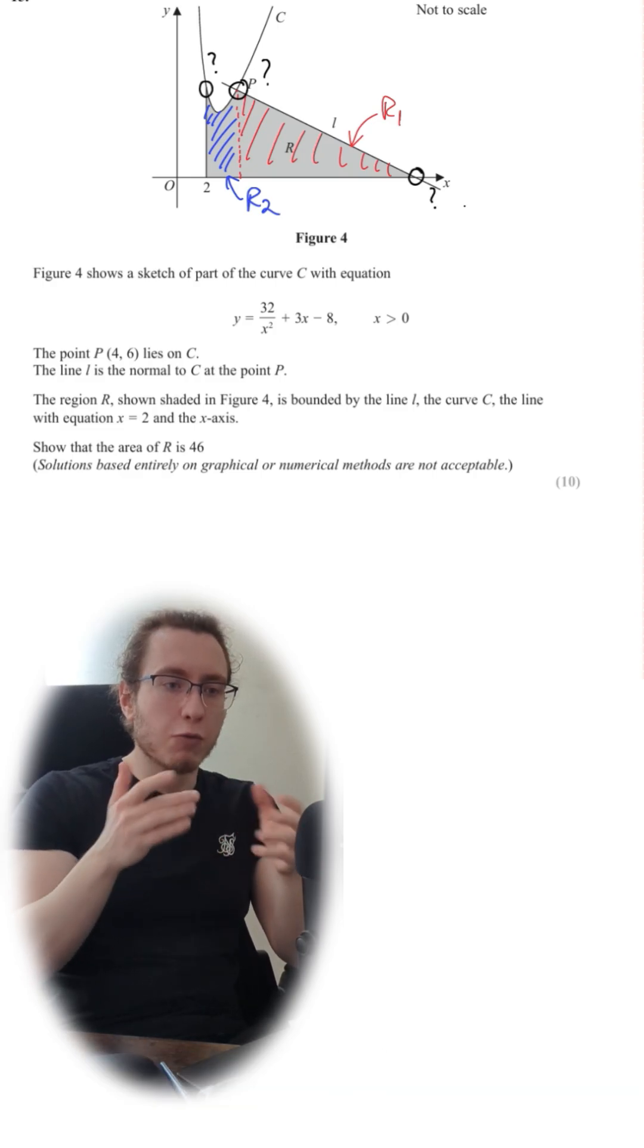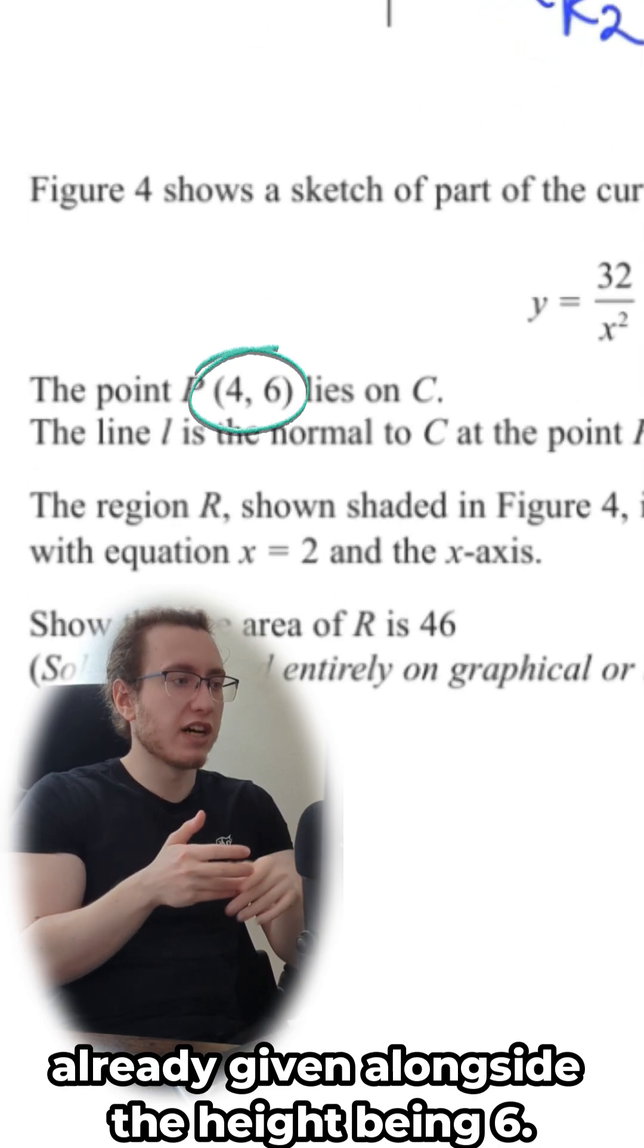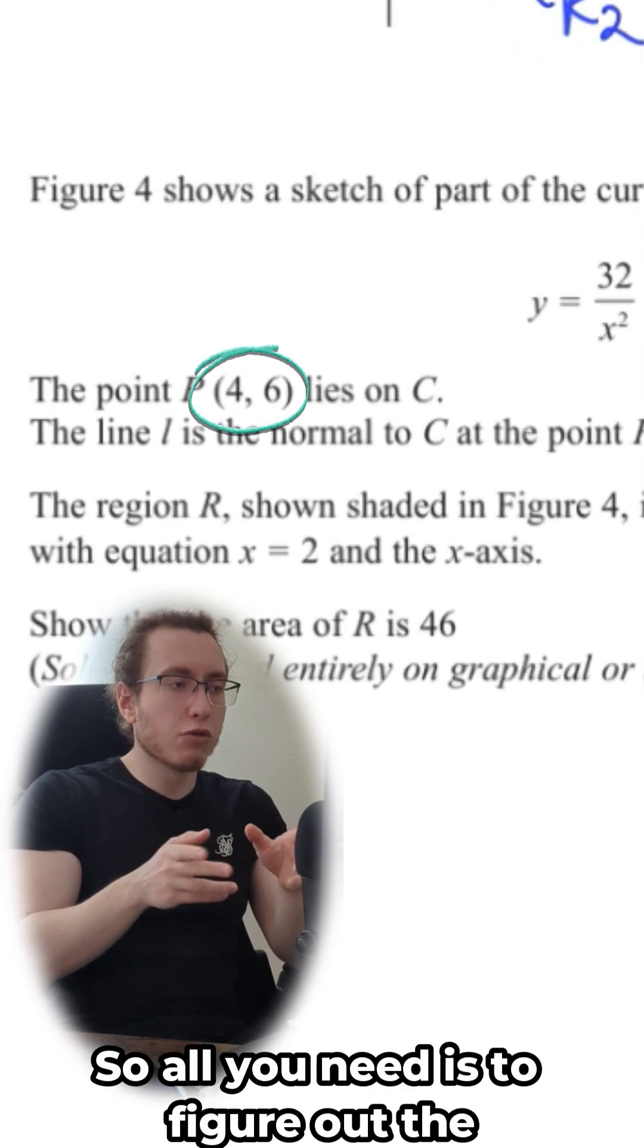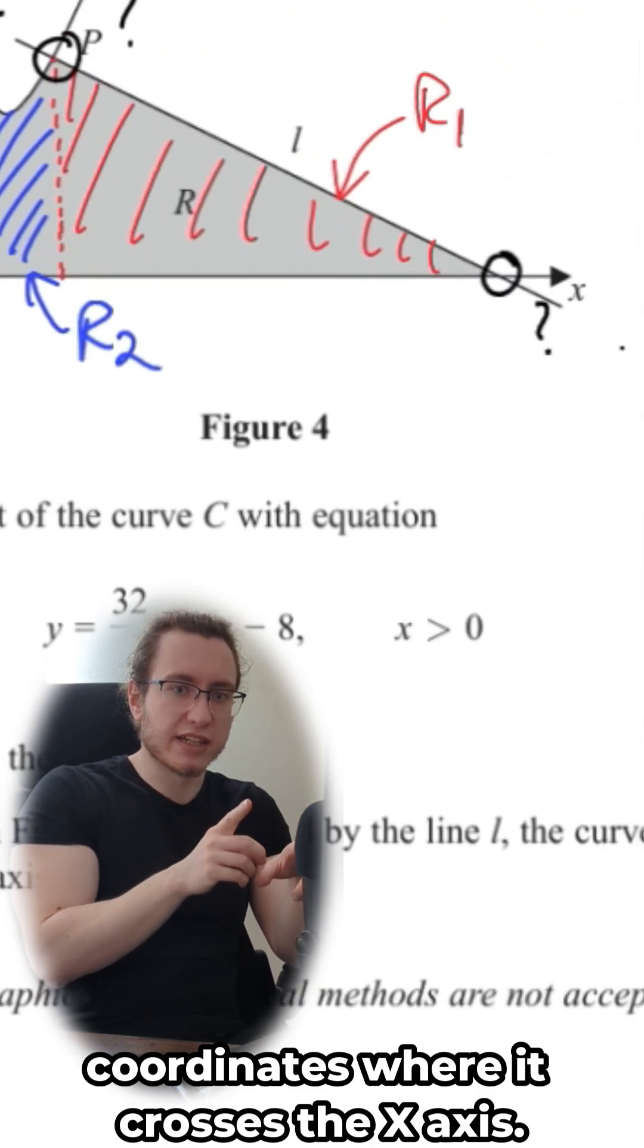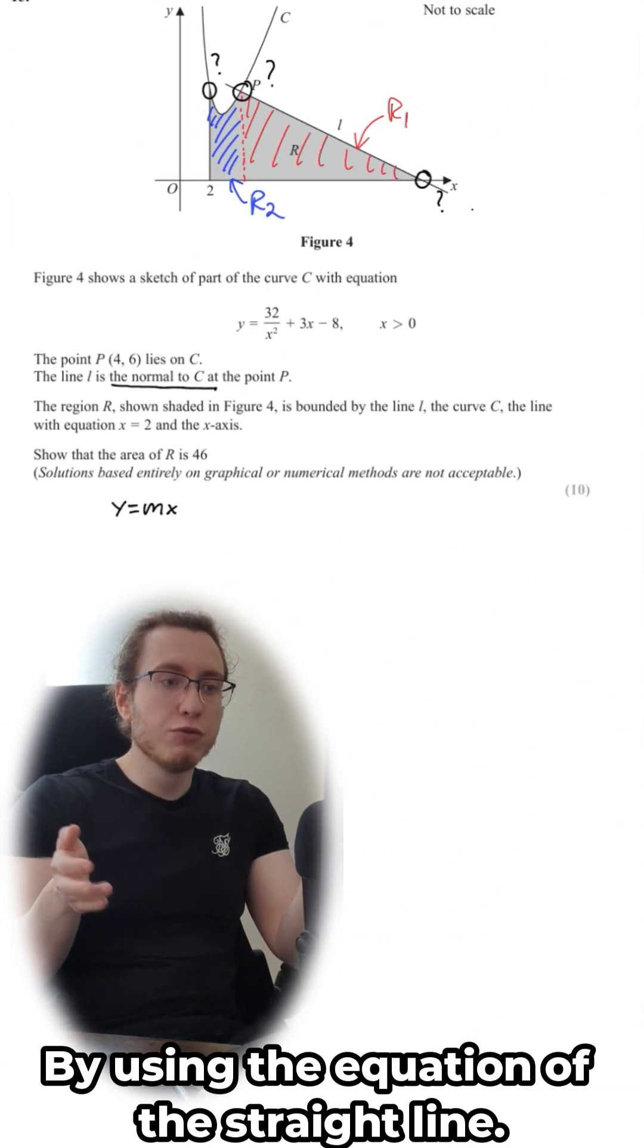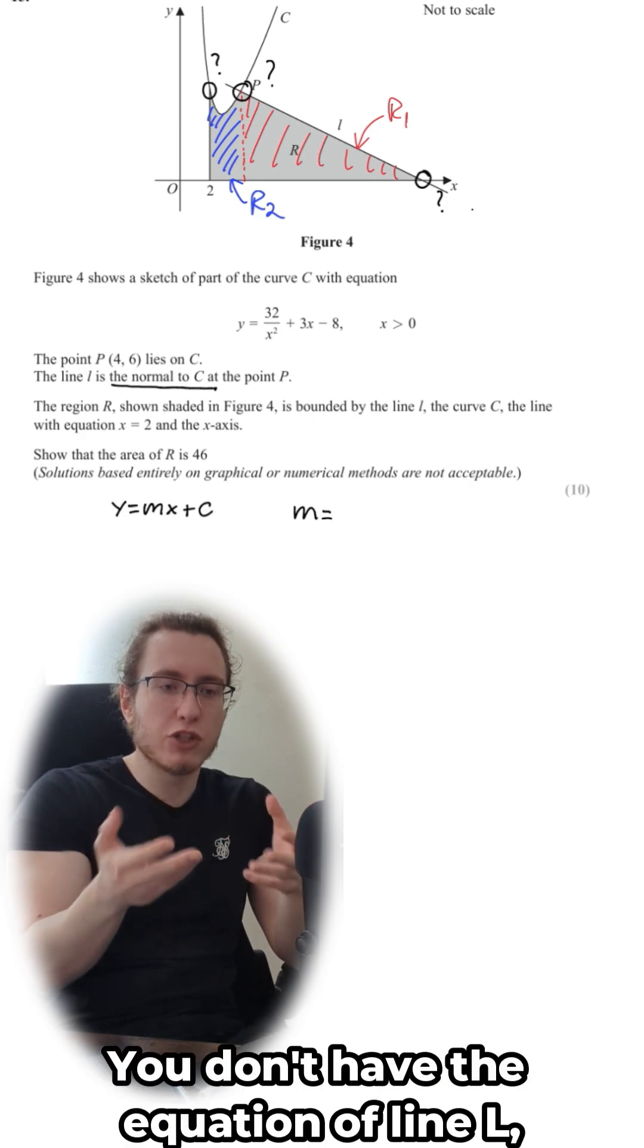So how can you figure out those things? Well, the x coordinate at the peak is already given alongside the height being 6, so all you need is to figure out the coordinates where it crosses the x-axis. How? By using the equation of the straight line. But you don't have that. You don't have the equation of line L, meaning you have to generate it.